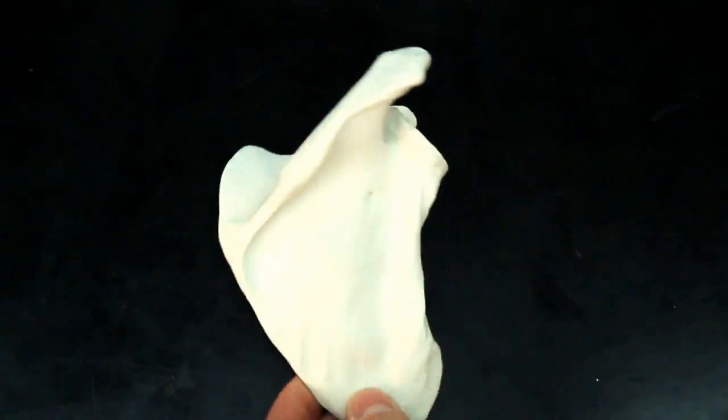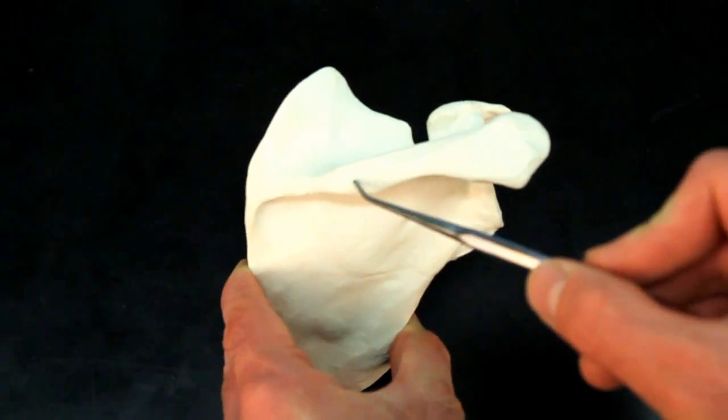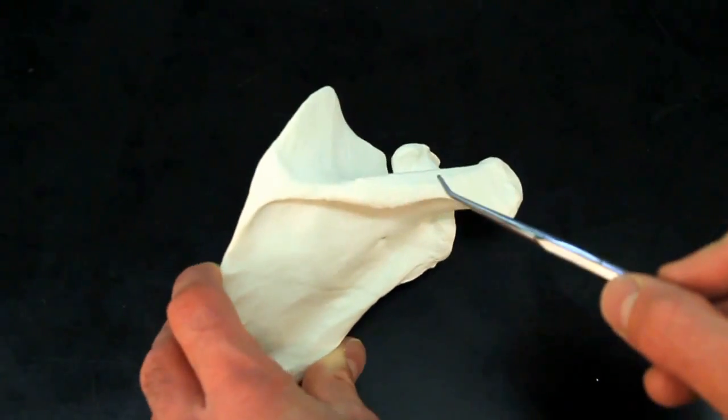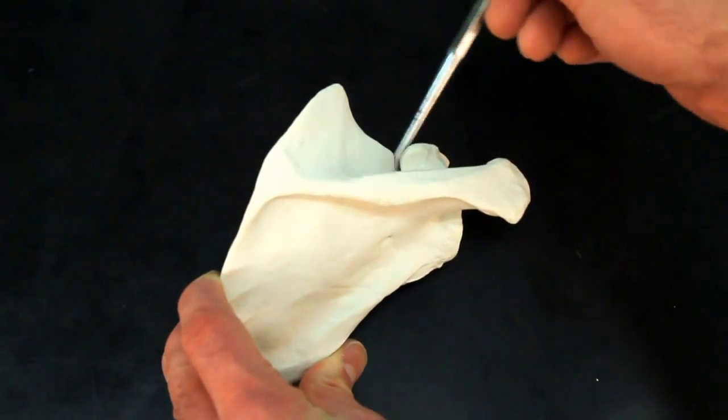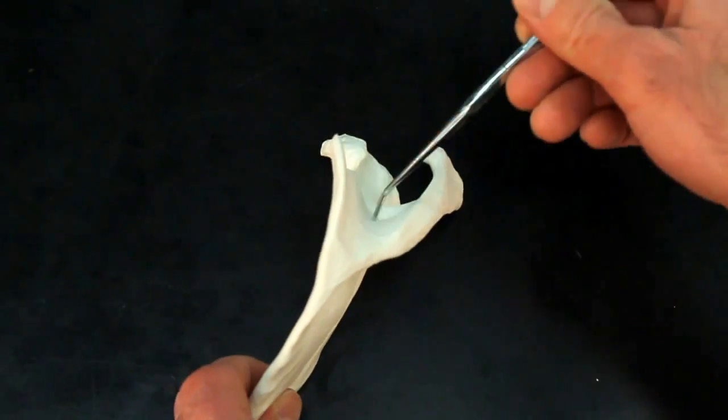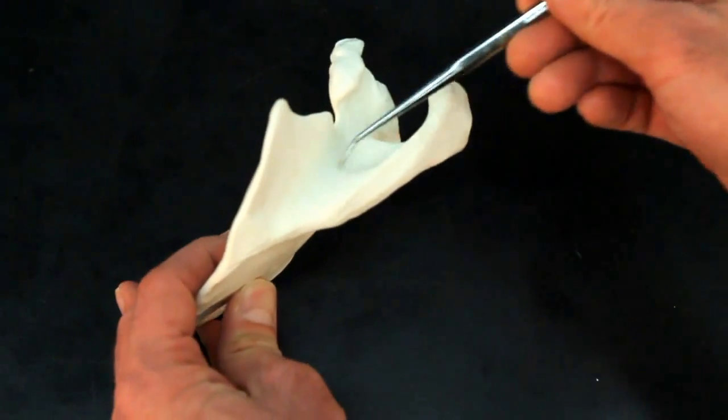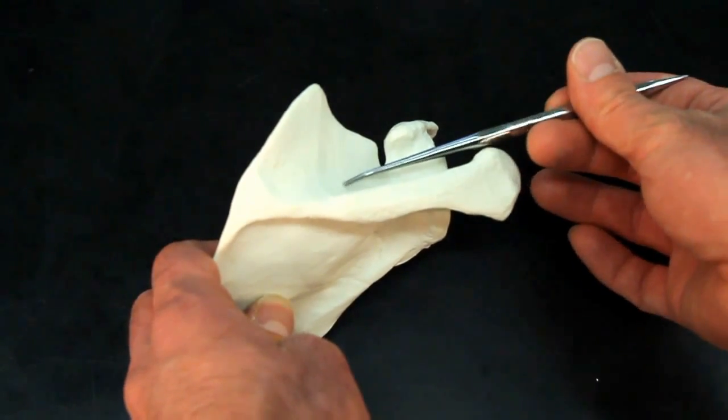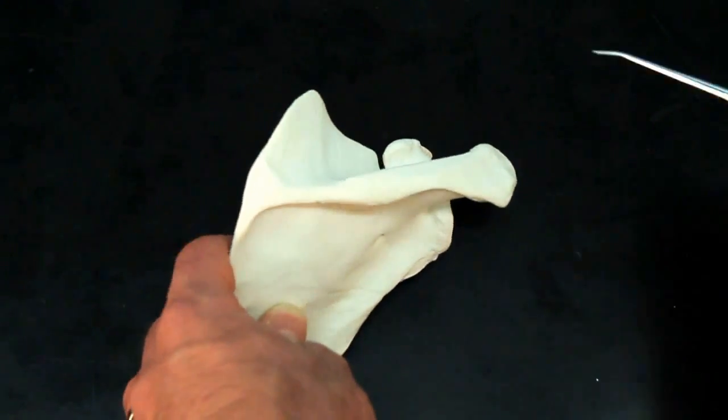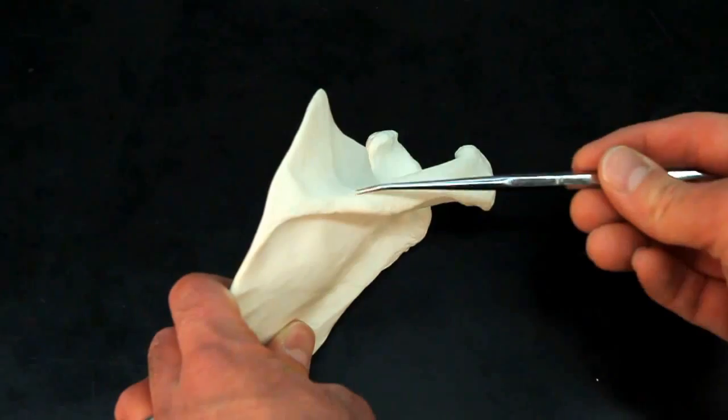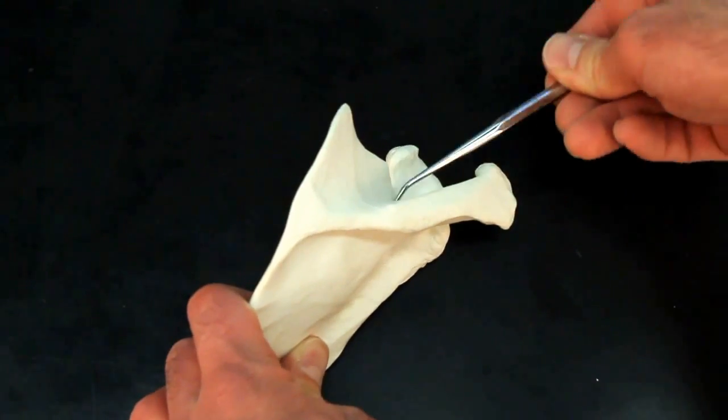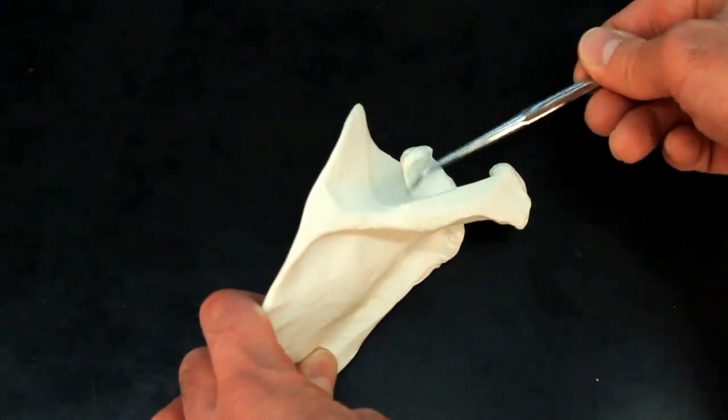Now, if we go to the posterior side again, you can see the scapular spine, but above the scapular spine, there is this space, or this indent, up here. This space is going to be the supraspinous fossa. Well, supra above, spinous is the spine, fossa, indent. Supraspinous fossa.